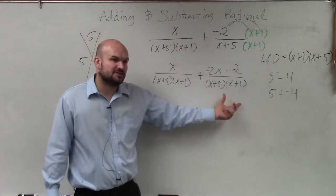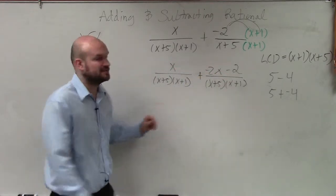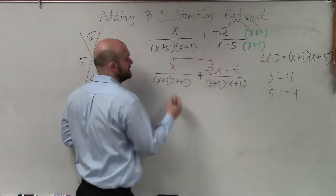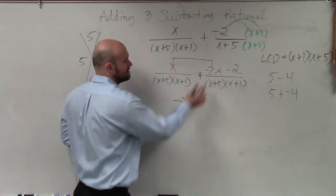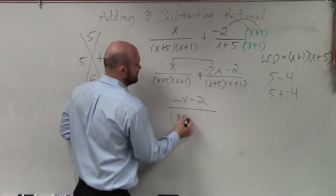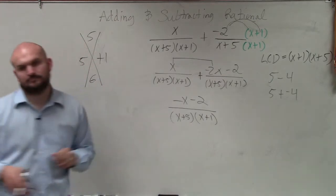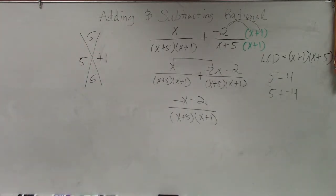Now we have two fractions with exactly the same denominators, so I can just combine the numerators. So what I have here is x minus 2x, which is just negative x, and then minus 2, all over (x+5)(x+1). You can multiply them together - I'm going to leave the answer like that though.